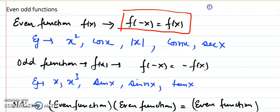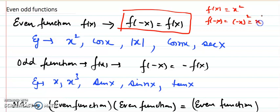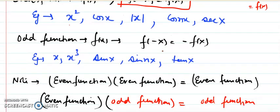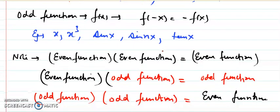For example, if f(x) = x², then f(-x) = (-x)² = x², so we get back our function. If this relation holds, the function is even. So x² satisfies this relation; cos x also satisfies it, as does |x|. Also, cos(2x), cos(3x), cos(nx), and sec(x) or sec(nx) are all even functions.